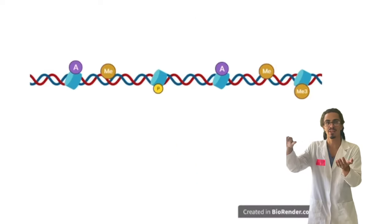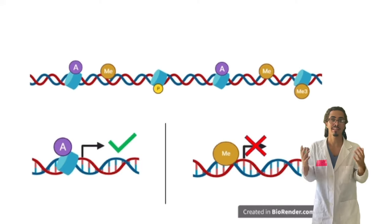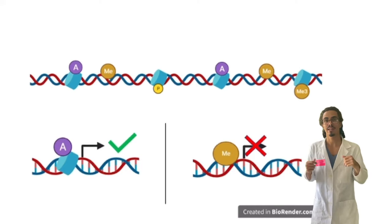The epigenome is an additional layer of chemical modifications that can either turn a gene on or off. By chemically modifying gene expression, we can have different cell types.